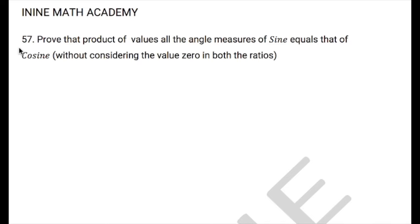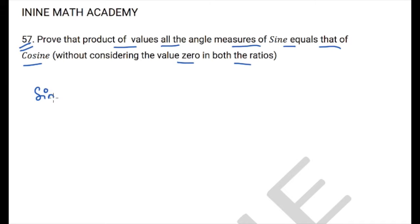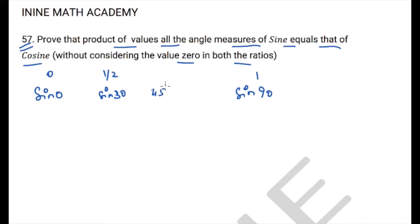Question 57: We need to prove that the product of sin values for all standard angle measures equals that of cosine, excluding the value 0 from both. The standard sin values are: sin0 = 0, sin30 = 1/2, sin45 = 1/√2, sin60 = √3/2, sin90 = 1.